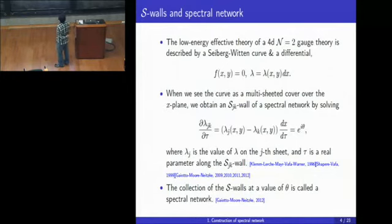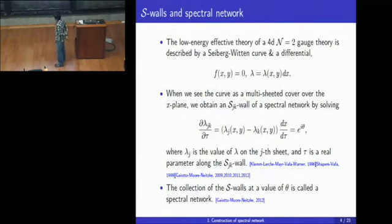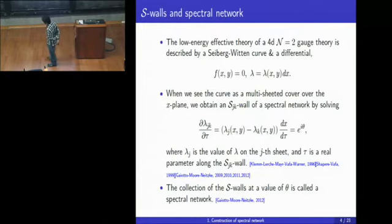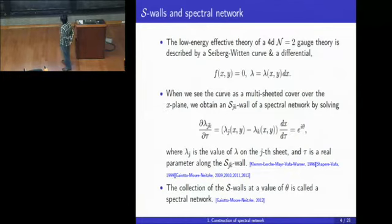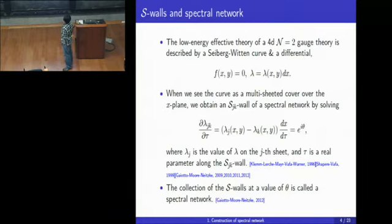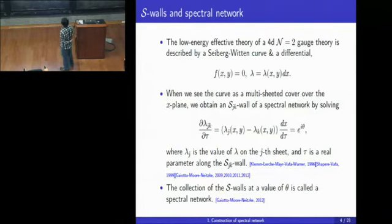Here, λ_j is the value of the Seiberg-Witten differential on the j-th sheet among the multi-sheeted cover, and τ is the real parameter along the projected boundary. This is how Klemm, Lerche, Meyer, Bena, and Warner first described the way of finding 4D BPS states in the 4D N=2 theory, and Gaiotto, Moore, and Neitzke extended this construction and introduced s-walls and spectral networks. An s-wall is a real one-dimensional curve on the base space that follows this differential equation, and a collection of those s-walls at a fixed value of θ is called a spectral network.